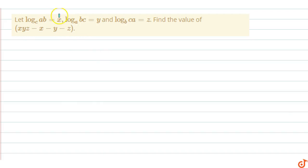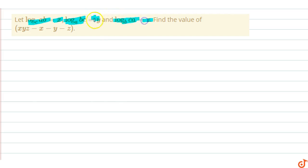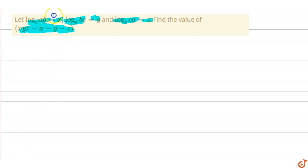In this question, let log(ab) base c equals x, log(bc) base a equals y, and log(ca) base b equals z. Then find the value of xyz minus x minus y minus z. So we have x, y, z as given log expressions.